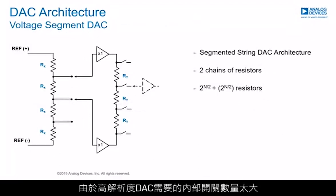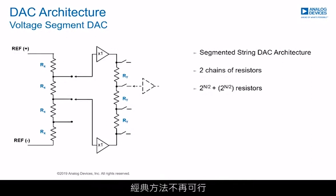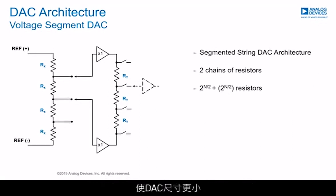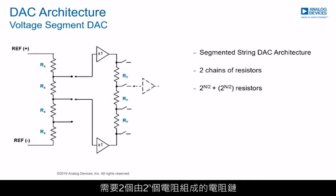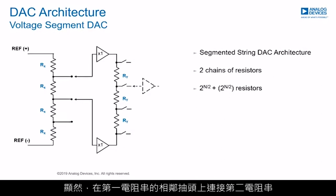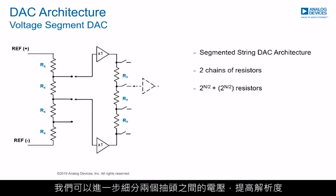The classical architecture has evolved to a segmented approach due to the required number of internal switches for high-resolution DACs, making the classical approach not feasible. Using a segmented string reduces the number of resistors required and thus makes the DAC smaller. This architecture is sometimes called a Kelvin-Varley divider and requires two chains of resistors — 2 to the power of N resistors. By connecting a second string of resistors across adjacent taps on the first string, we may further subdivide the voltage and thus increase resolution.